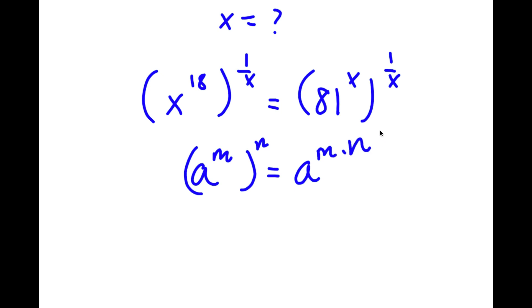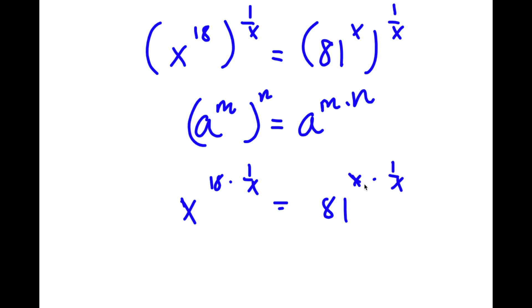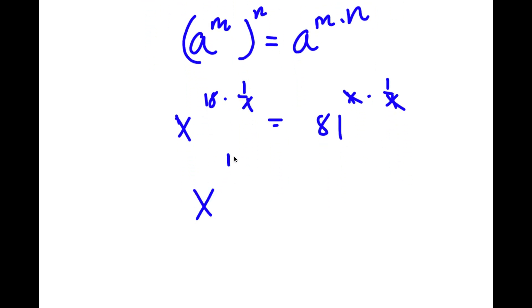So in this case, I have x to the power of 18 to the power of 1 over x, which is the same thing as x to the power of 18 times 1 over x, equal to 81 to the power of x times 1 over x. These two cancel out, leaving x to the power of 18 over x is equal to 81.